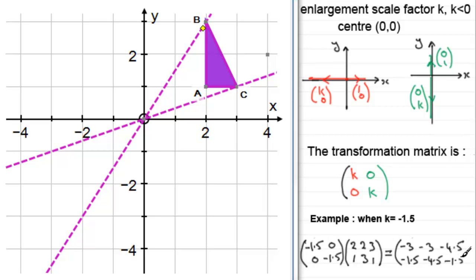So let's plot these points. We find that A, which was at (2,1), has now gone to (-3, -1.5). (-3, -1.5) is that point there.